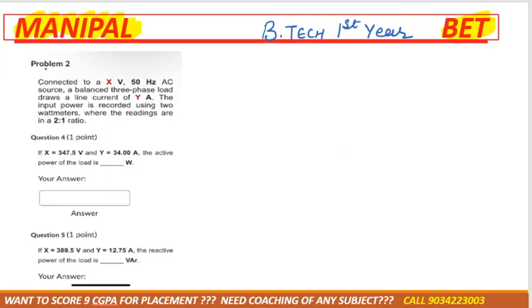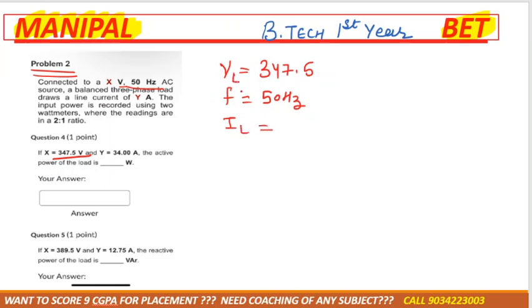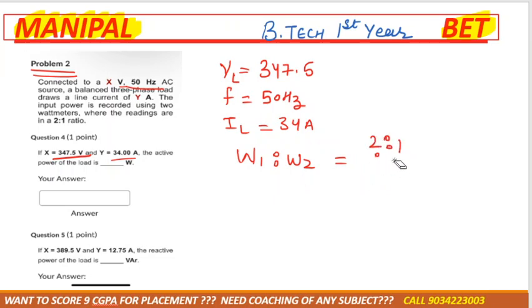The next assignment problem: voltage is given as 347.5 volt, frequency is 50 Hertz AC source, a balanced 3-phase load draws a line current IL of 34 ampere. The input power is recorded using 2 watt meters where the reading ratio W1 to W2 is 2 to 1.